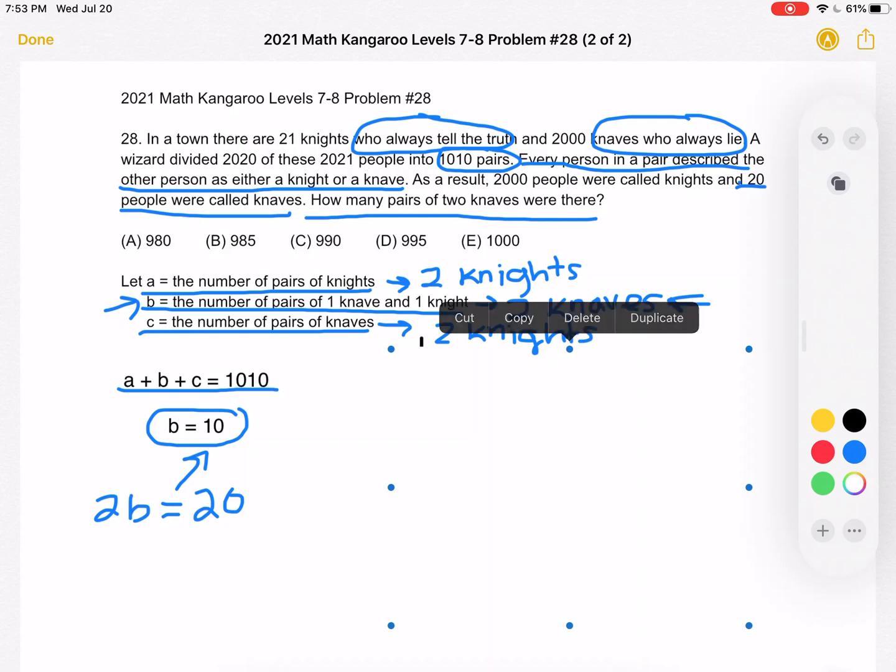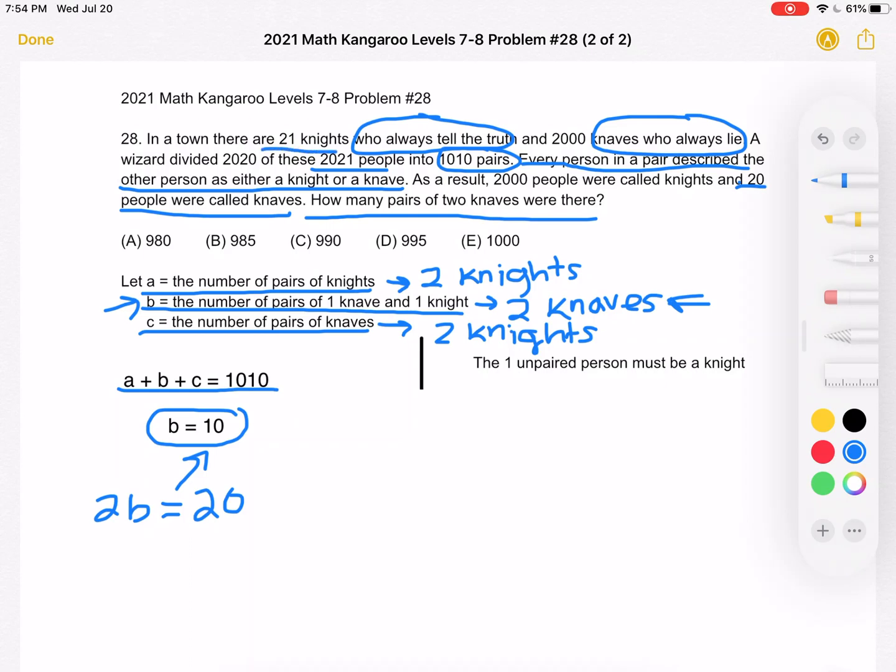This is important because it tells us that the one unpaired person must be a knight. Because keep in mind, we had a total of 2021 people. But if we know that there's 10 pairs of type B, that means that the leftover person must be a knight. Because we would have 21 knights, 10 of whom are in type B pairs, and then 11 is not divisible by two. So that one leftover person must be a knight for the remaining 10 people to be in pairs of type A.